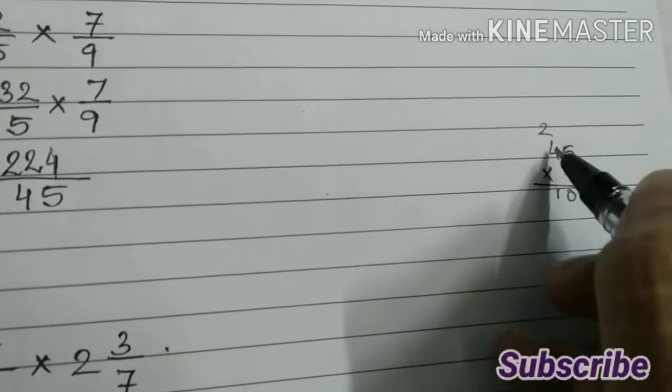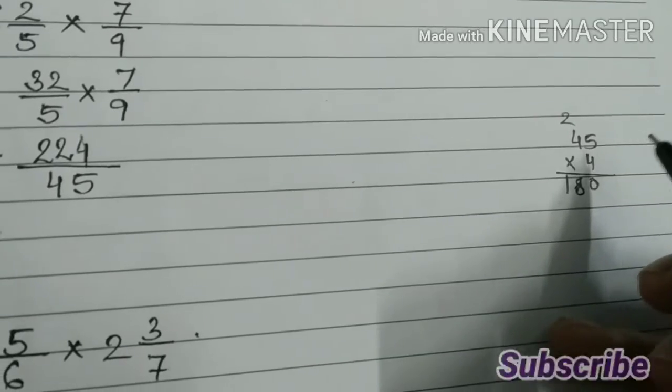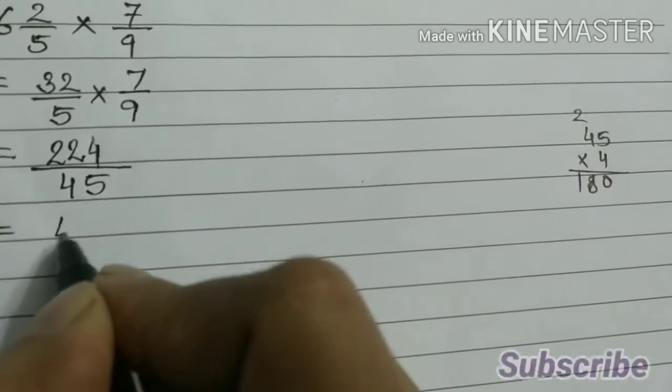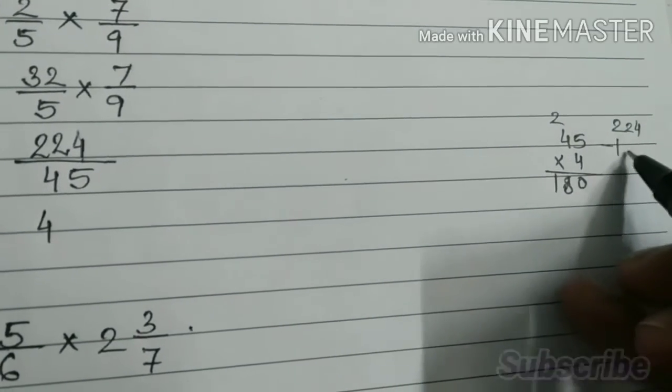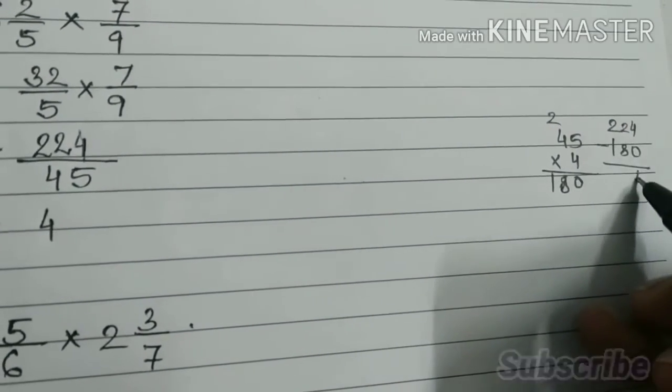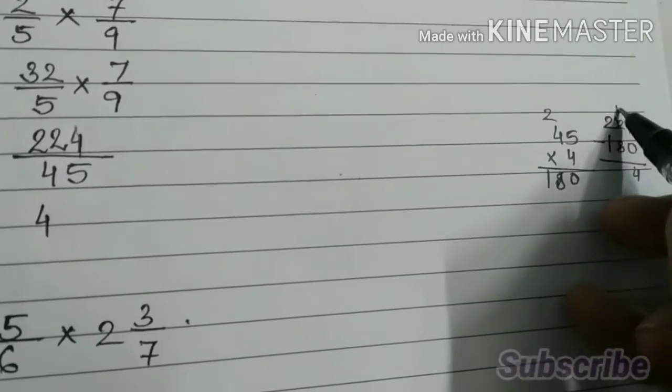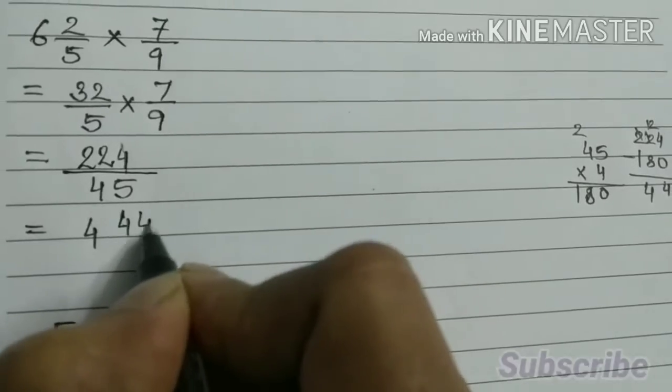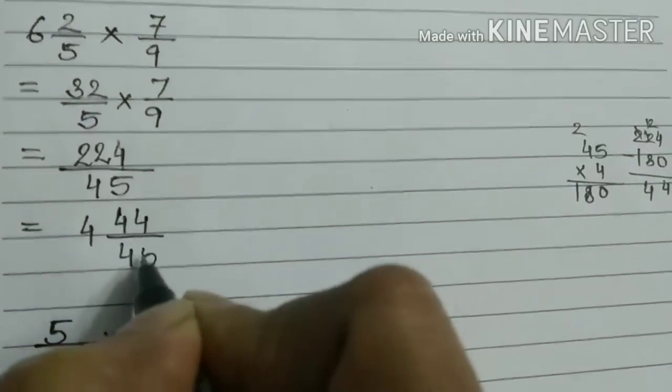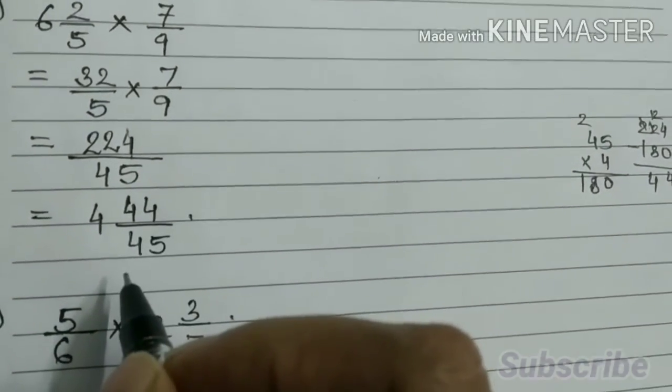4 4s are 16, 18, 180. So 4s are 180. What will be the remainder? 4 44. So 4 44 by 45. This is the mixed fraction.